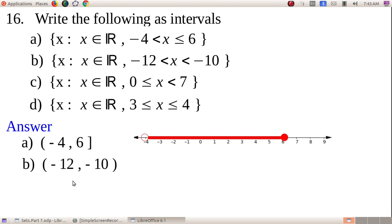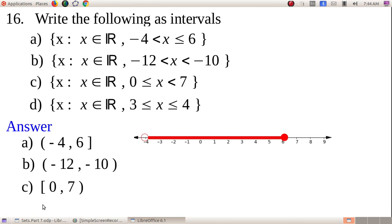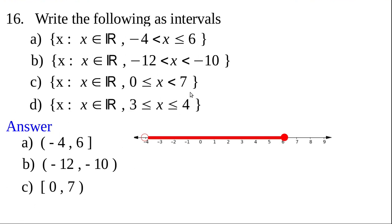Part B: {x : x ∈ ℝ, −2 < x < −1} — both ends open, so the answer is open interval (−2, −1). Part C: {x : x ∈ ℝ, 0 ≤ x < 7} — closed-open interval [0, 7). Part D: {x : x ∈ ℝ, 3 ≤ x ≤ 4} — both ends have 'less than or equal to,' so the answer is closed interval [3, 4].